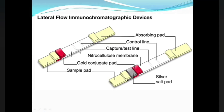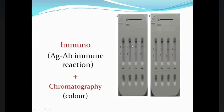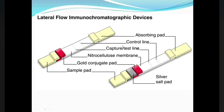The next part is the nitrocellulose membrane, which contains a surfactant that makes it hydrophilic. There are two lines on the nitrocellulose membrane: the first is the capture or test line, and the second is the control line. As we move from the sample pad towards the nitrocellulose membrane, we encounter the test line first, followed by the control line. The test line determines whether the result is positive or negative, while the control line is used to determine the validity of the test and proper technique of the assay.